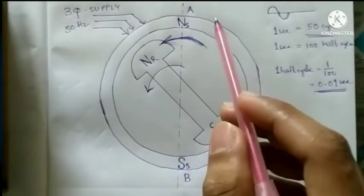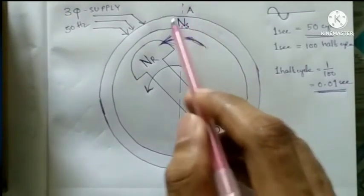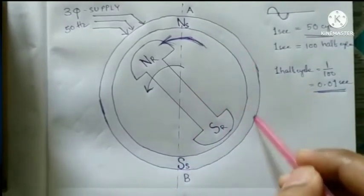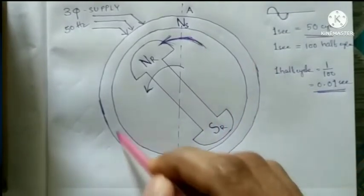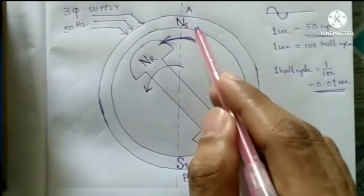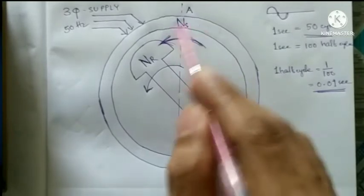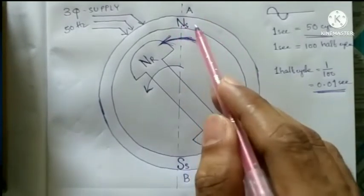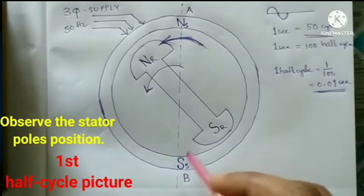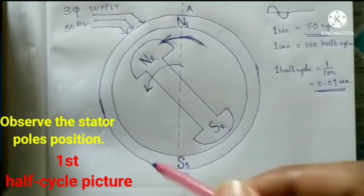In a full cycle, NS rotates all the way around and returns to its starting position — that is called a full cycle. When NS has come halfway around, that is called a half cycle.